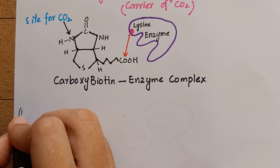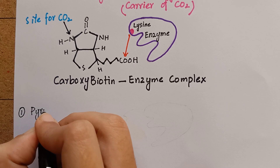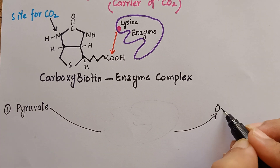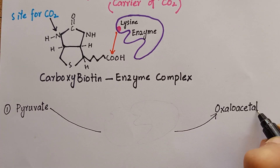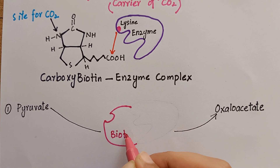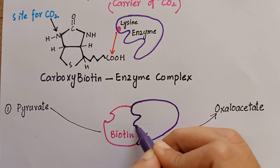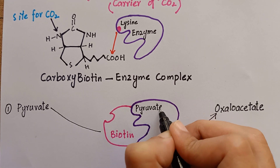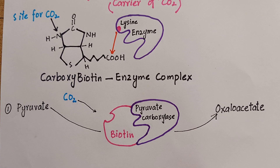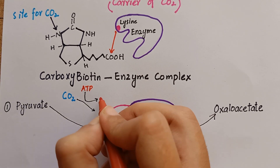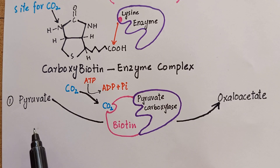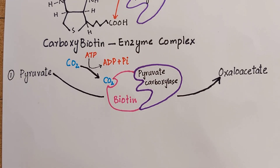Now coming to the biochemical reactions that involve biotin as a coenzyme: the conversion of pyruvate to oxaloacetate in the process of gluconeogenesis requires biotin. In this reaction, biotin combines with pyruvate carboxylase enzyme. This biotin enzyme complex reacts with carbon dioxide in the presence of ATP to form the carboxybiotin enzyme complex, which then hands over the carbon dioxide to pyruvate to produce oxaloacetate.